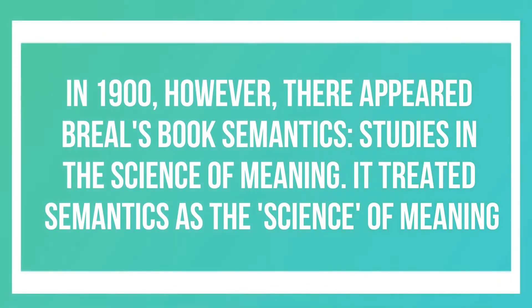In 1900, however, Bréal's book 'Semantics: Study in the Science of Meaning' was published in the English language. This was the first time that semantics was introduced in terms of meaning — the first occurrence of semantics in terms of meaning, in 1900 by Bréal.